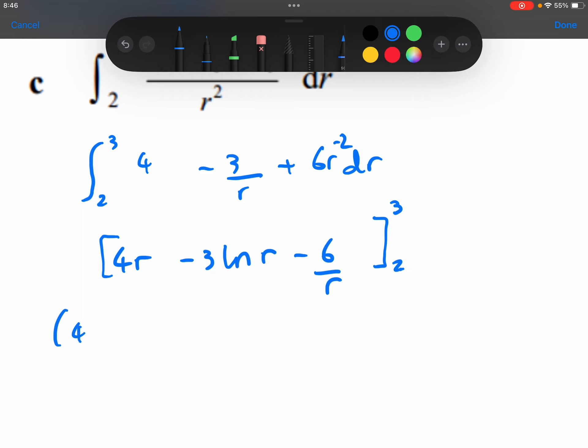Substituting the 3 in, so we get 4 times 3, minus 3 ln 3, minus 6 over 3. Substituting the 2 in. 4 times 3 is 12. 6 over 3 is 2. The 12 minus the 2 is 10. 4 times the 2 is 8. The 6 over the 2 is 3. The 8 minus the 3 is 5.